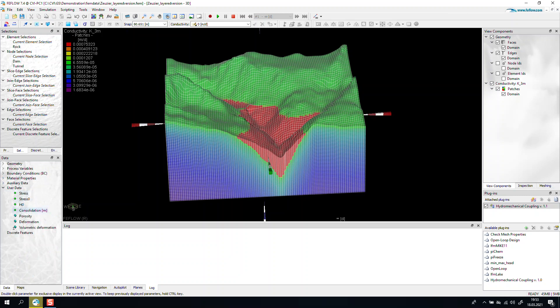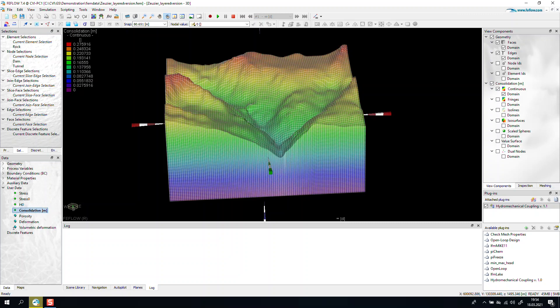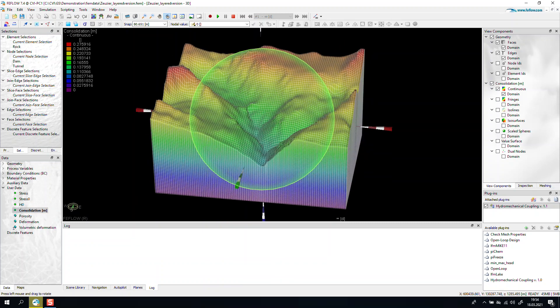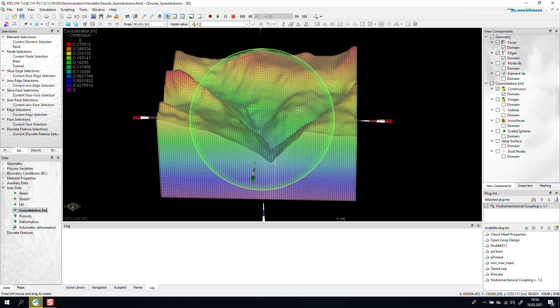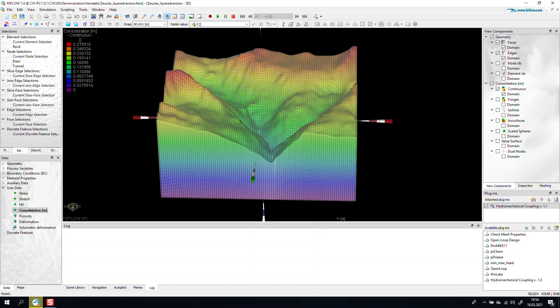Let's look now at the distribution of consolidation. We have the distribution called consolidation in meters. We just double click and we can investigate this information. FEFLOW has calculated a consolidation in each of the nodes, and this depends on the distribution of effective stresses.